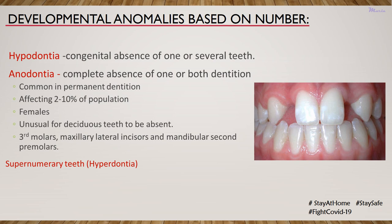Hypodontia means the congenital absence of one or several teeth, whereas oligodontia means the complete absence of one or both dentitions. In anodontia, either the entire primary dentition or the permanent dentition is absent. The permanent dentition is more commonly affected than the primary dentition. Hypodontia affects 2 to 10 percent of the population, and females are more commonly affected. It is unusual for a deciduous tooth to be absent. The most common missing teeth are the third molars, maxillary lateral incisors and mandibular second premolars.